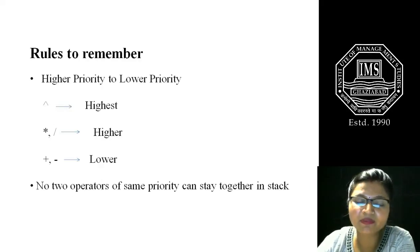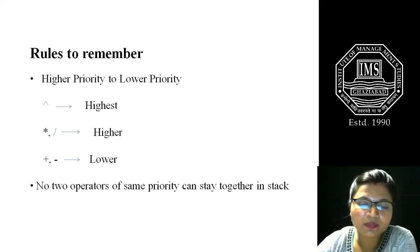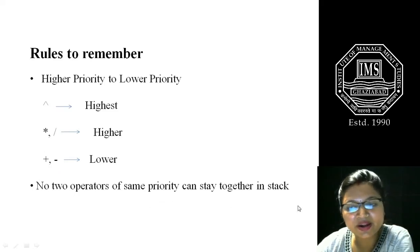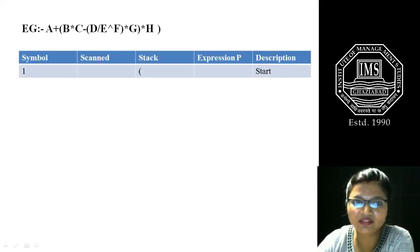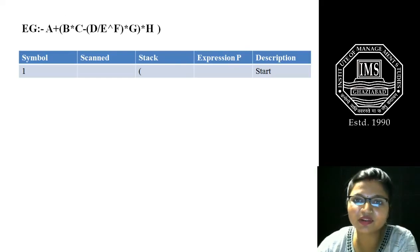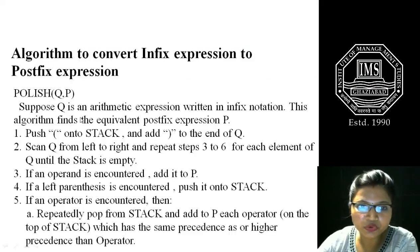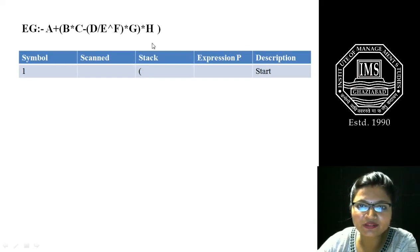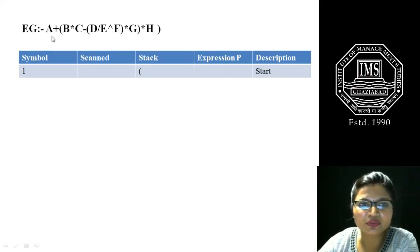Let's understand with an example, but first remember some rules. The exponentiation operator has the highest priority; multiplication and division are next. No two operators of the same priority can stay together in the stack. Now, suppose this is the infix expression we want to convert to postfix. According to our algorithm, we first push the opening bracket onto the stack and add a closing bracket to the end of Q. Now we start scanning the expression from left to right.